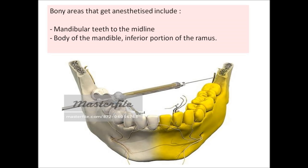To understand the distribution of anesthesia produced by the inferior alveolar nerve block, it is easier to understand it in terms of bony areas and soft tissue parts. Bony areas that get anesthetized include mandibular teeth through the midline, body of the mandible, as well as the inferior portion of the ramus.